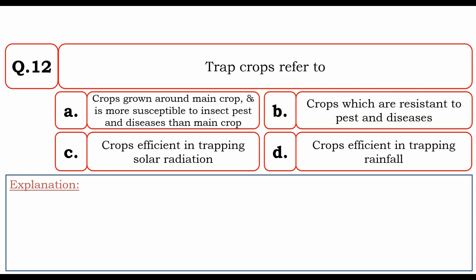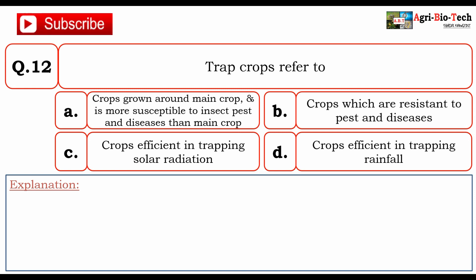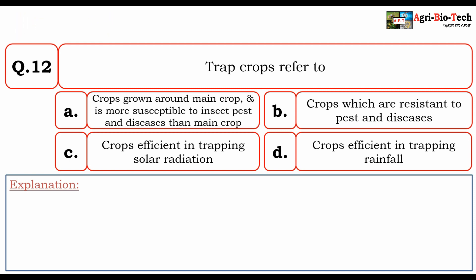Next question: Trap crops refers to? The given options are A. Crops grown around the main crop that are more susceptible to insect pests and diseases than the main crop, B. Crops which are resistant to pests and diseases, C. Crops efficient in trapping solar radiation, and D. Crops efficient in trapping rainfall. The correct answer is A.